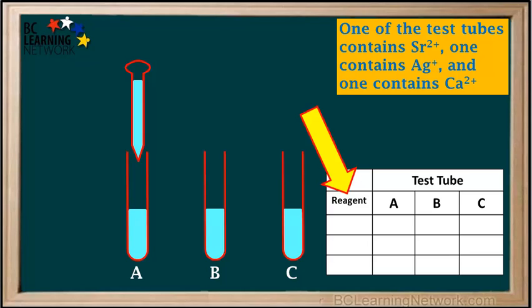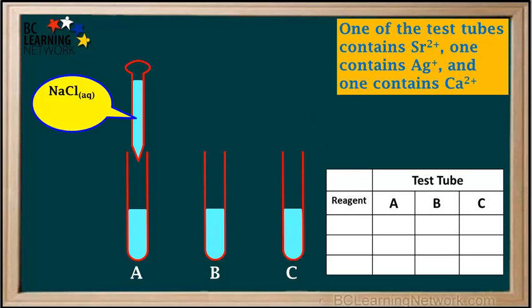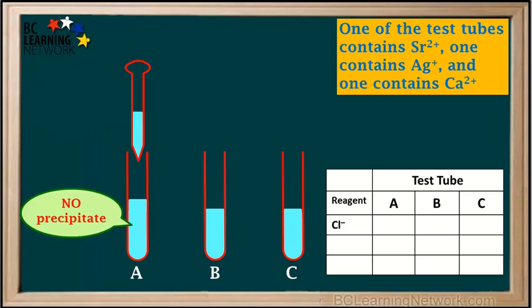The solutions we add to the test tubes are called reagents. We obtain a solution of sodium chloride. For this experiment, we'll consider it just a source of chloride, or Cl- ions, and we'll add it to the table as one of our reagents. We'll add the chloride solution dropwise to test tube A. Chloride did not form a precipitate with the ion in test tube A, so we'll write a dash here for chloride in test tube A.